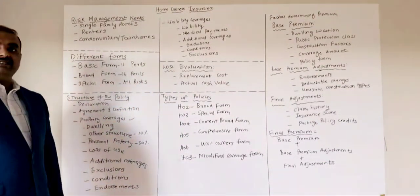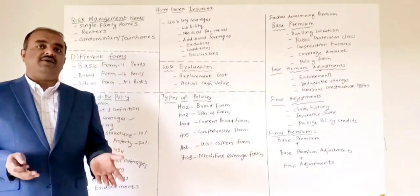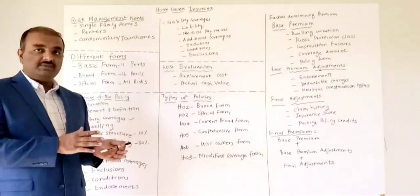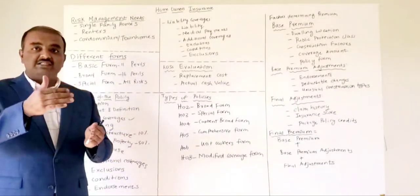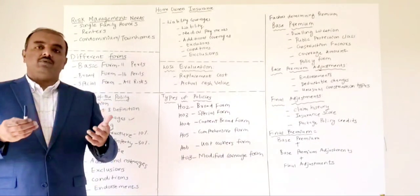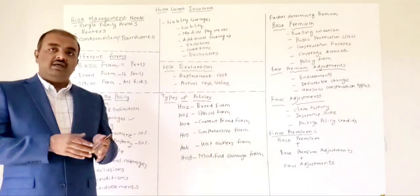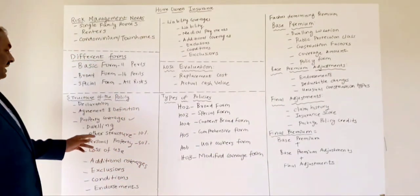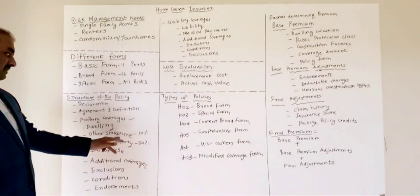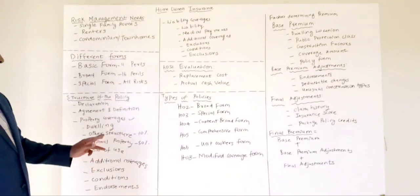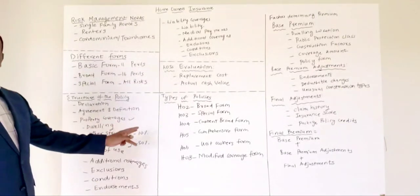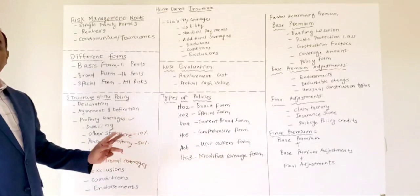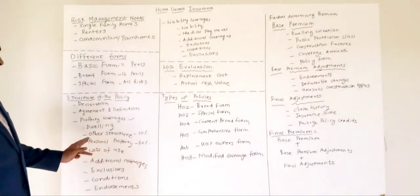Other structures coverage takes care of anything not directly part of your dwelling. A garage attached to your dwelling would fall under dwelling coverage, but a swimming pool or a shed that is not attached to your dwelling would be covered under other structures. The best practice is that if you have dwelling coverage of $400K, other structures coverage is 10% of that — around $40K.